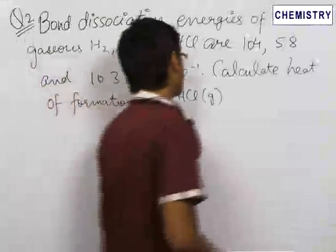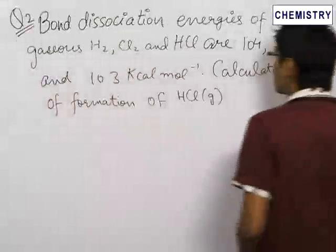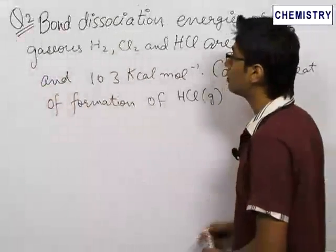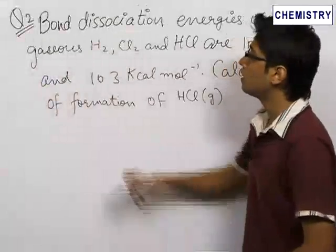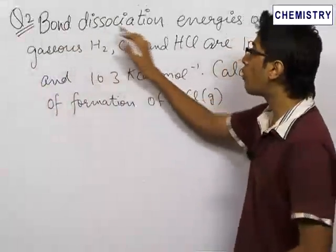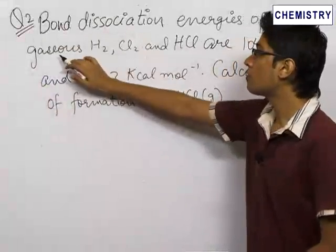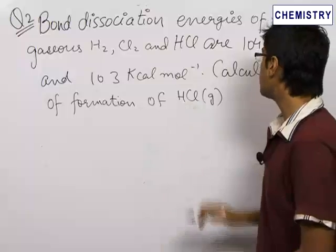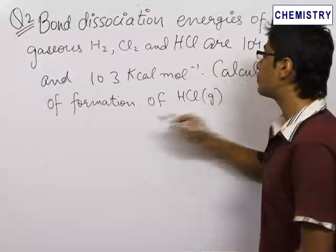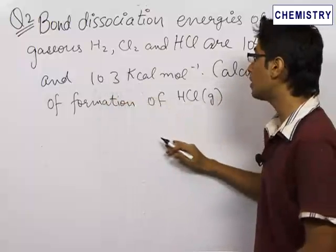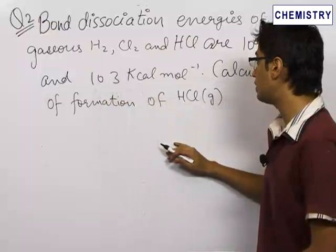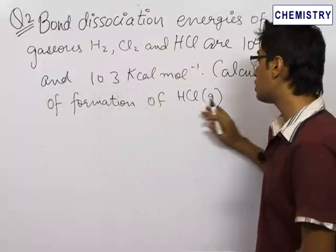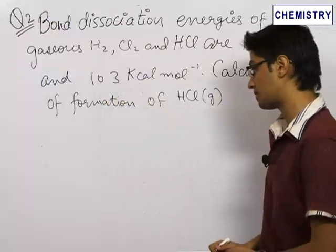The second problem is also an important conceptual problem. We are given that the bond dissociation energies of gaseous hydrogen, chlorine, and HCl are 104, 58, and 103 kilocalories per mole respectively, and we need to find the heat of formation of HCl gas.